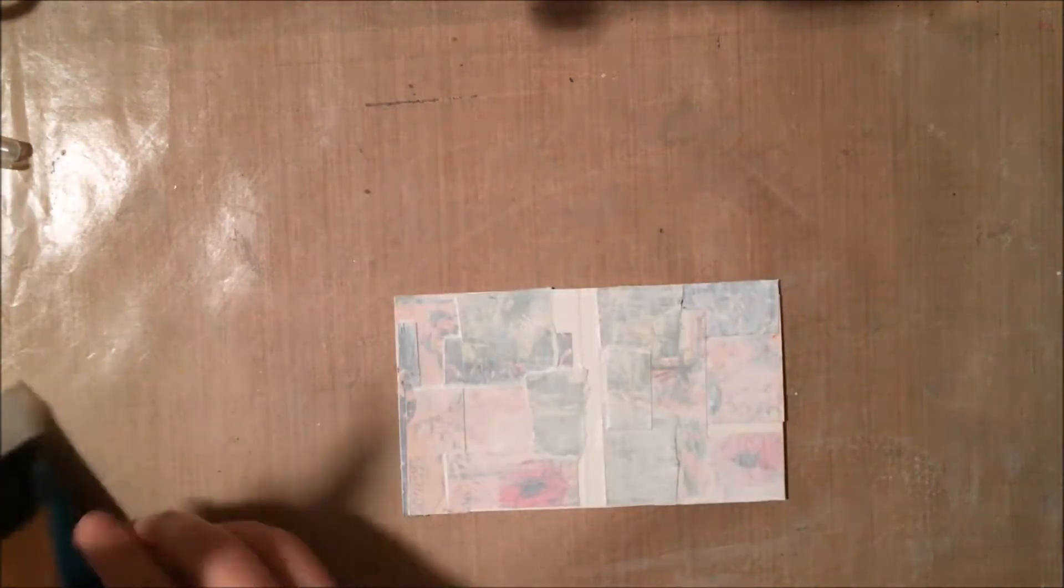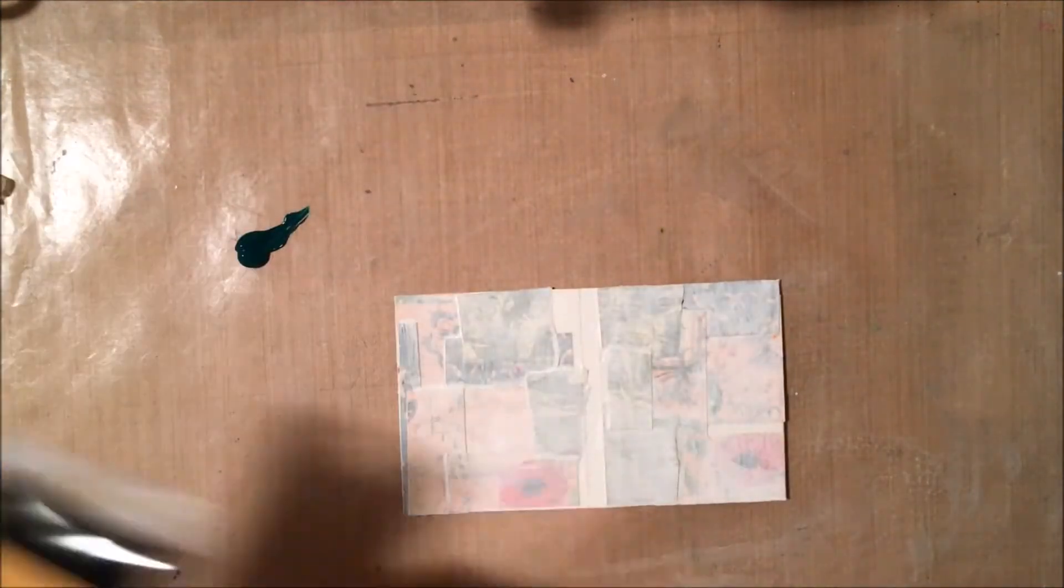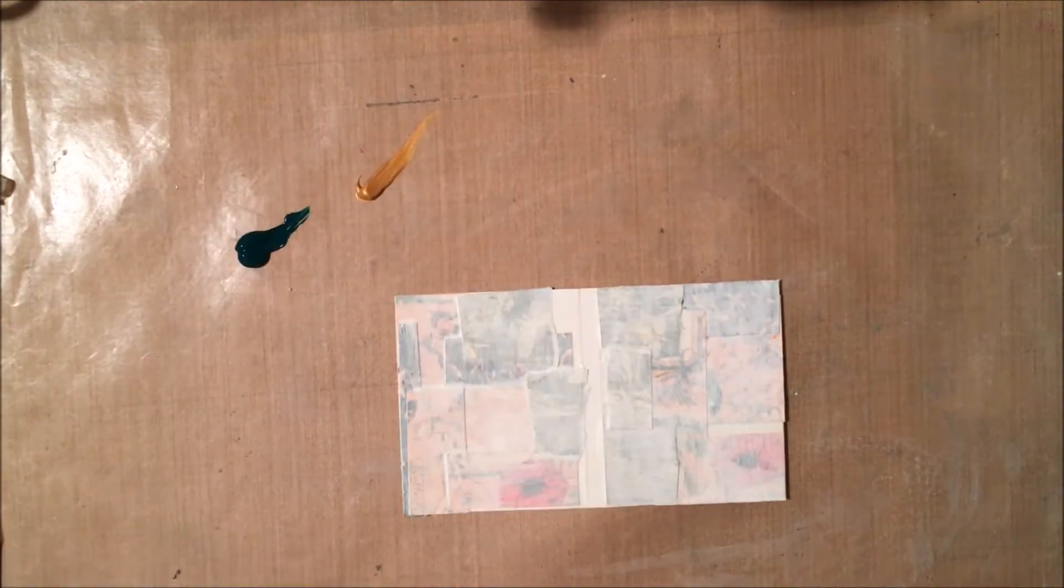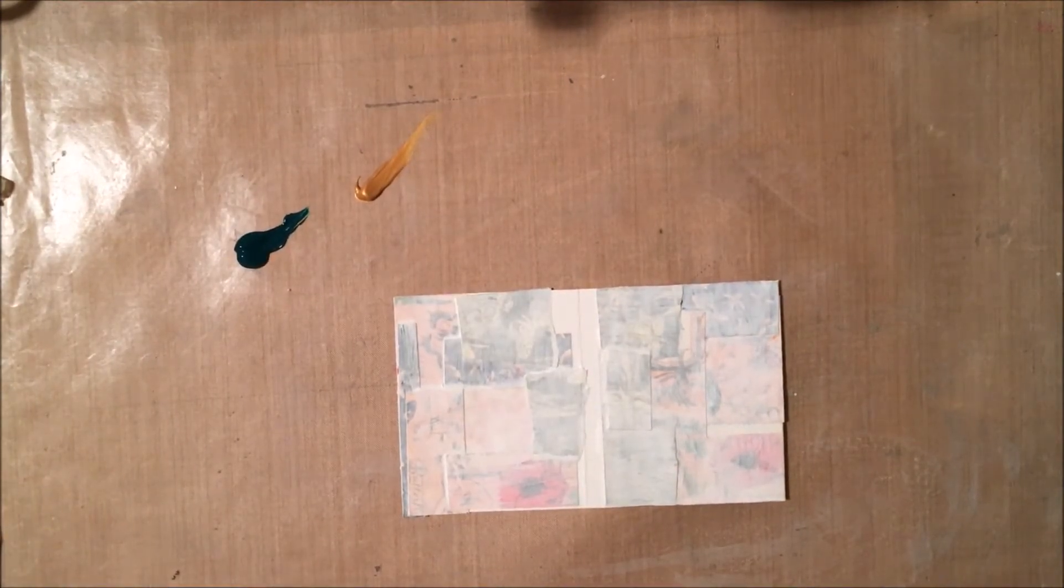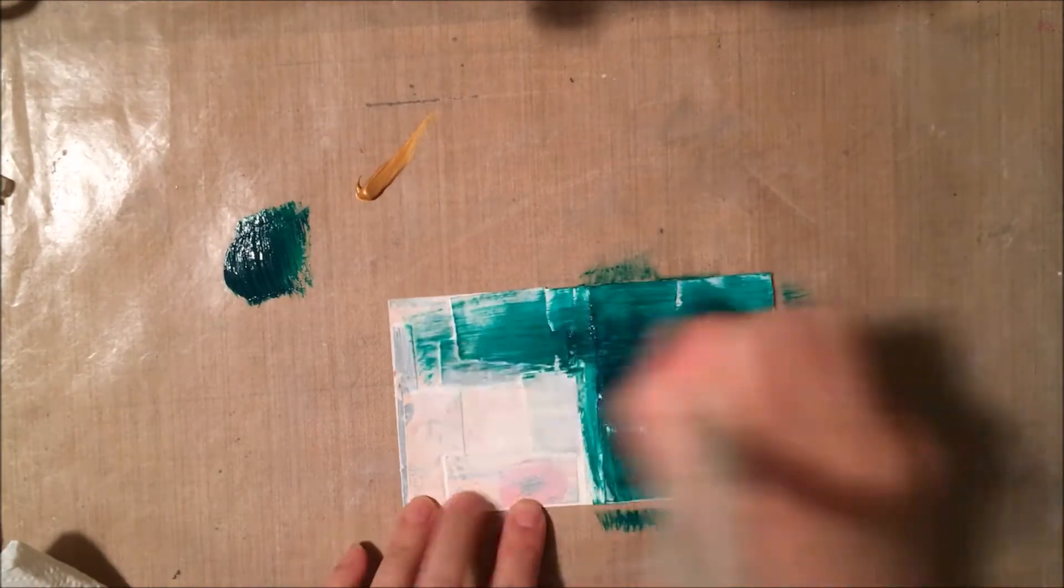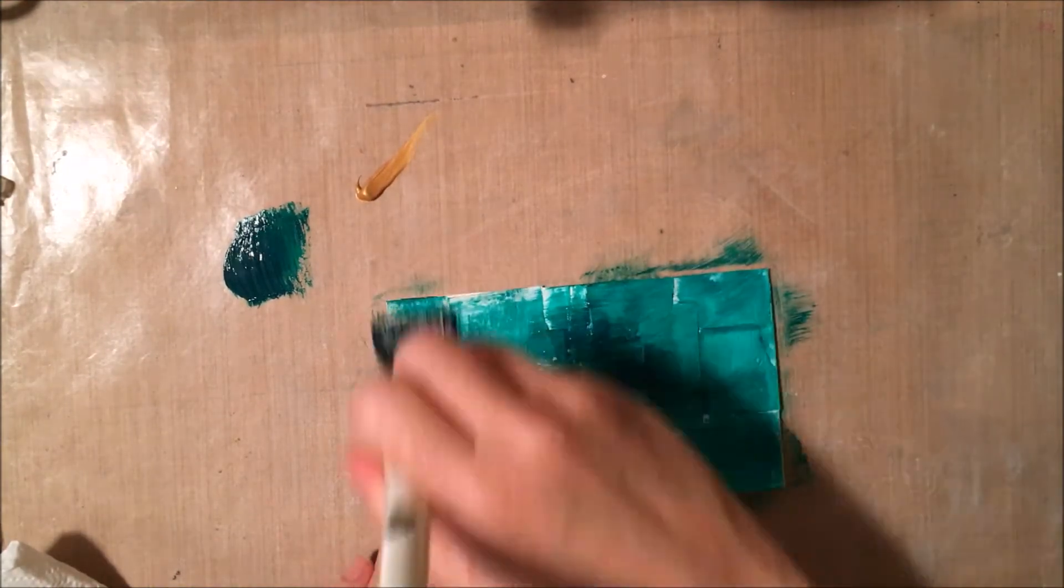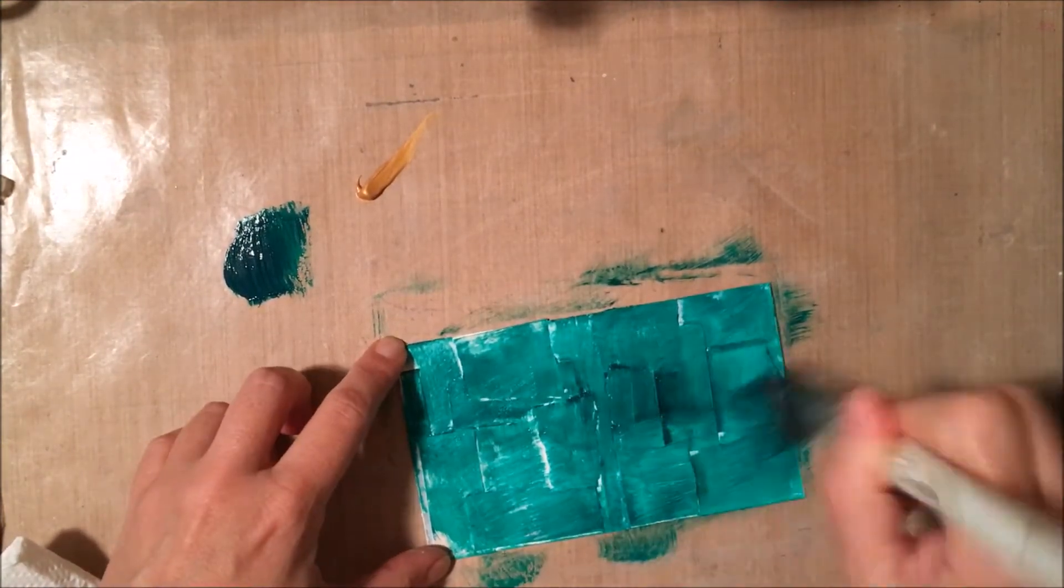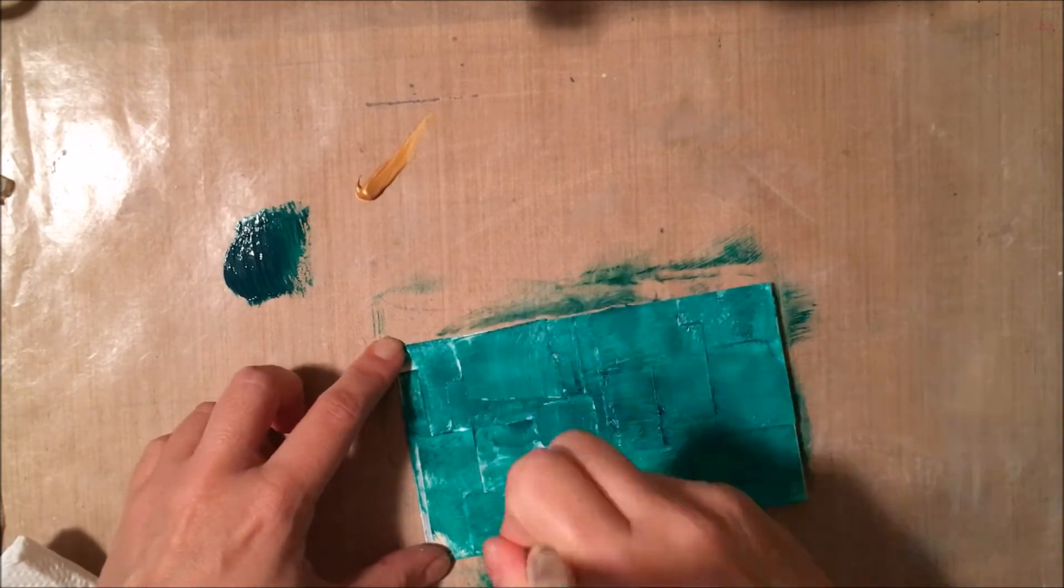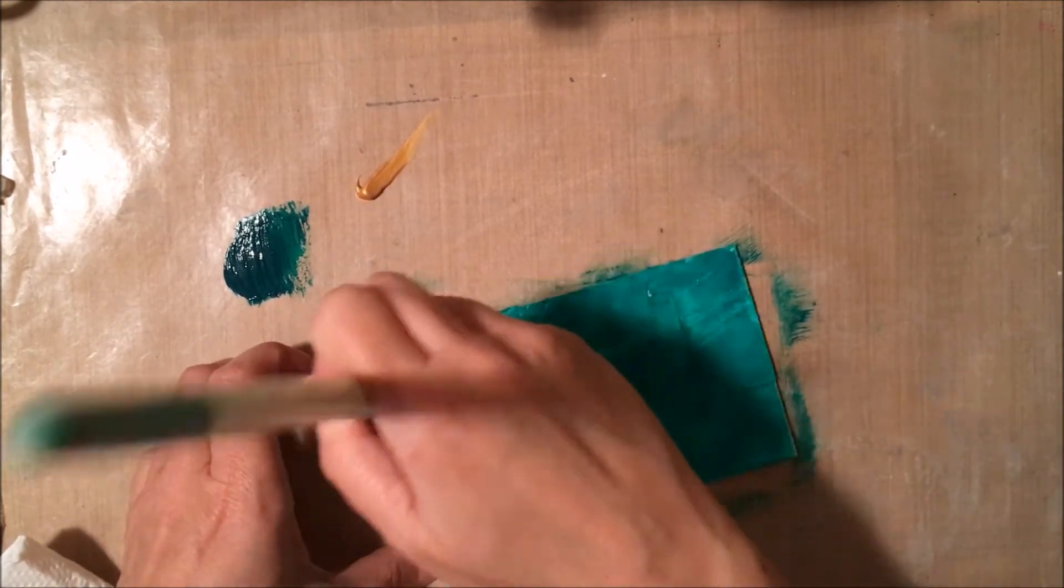And then I'll add some, I'm using some of the Crafters Workshop paint. You could use any acrylic paint that you have. I'm using some of this beautiful green shade and a little bit of gold. I'm going to go on with a very thin first coat and I'll show you why I am doing that. This is when you can really start to see the texture of those papers. I love this green, isn't that gorgeous?